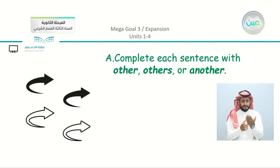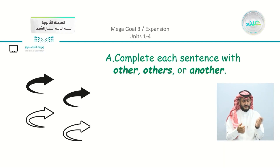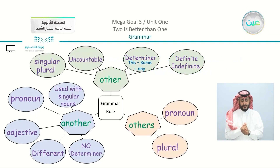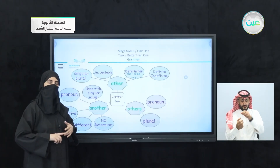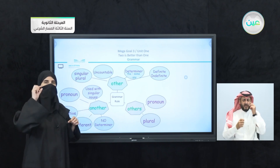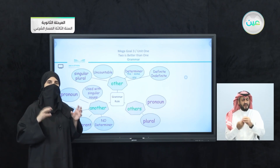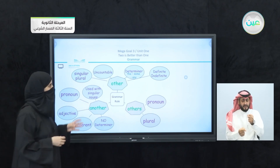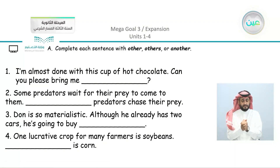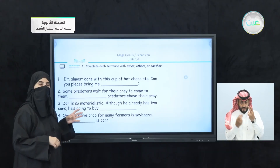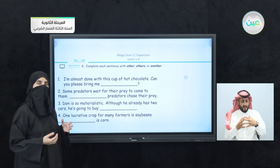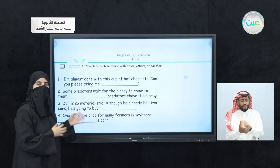Now in the book we have the first task. In the expansion, we have Exercise A: complete each sentence with 'other,' 'others,' or 'another.' We can see the grammar chart we studied in unit 1 with the three words and their characteristics. Before we start, note that we are also going to revise vocabulary, and you can focus on different structures within the same sentences.